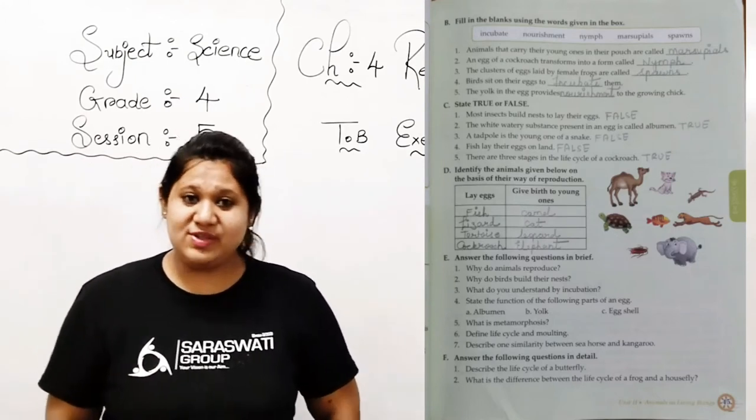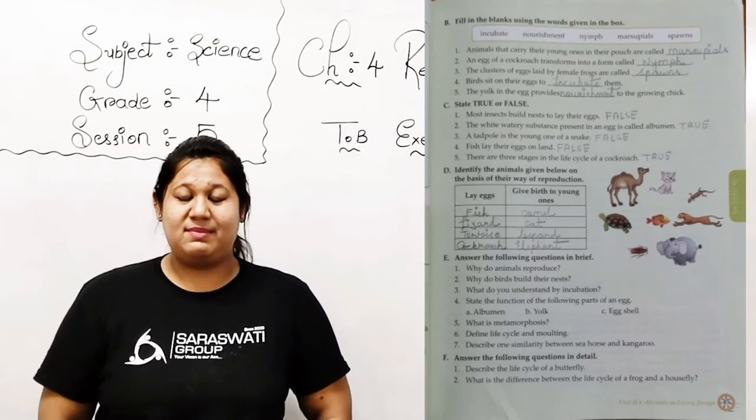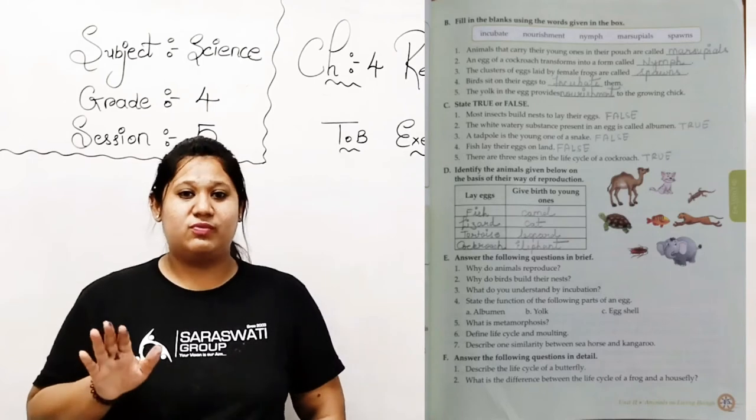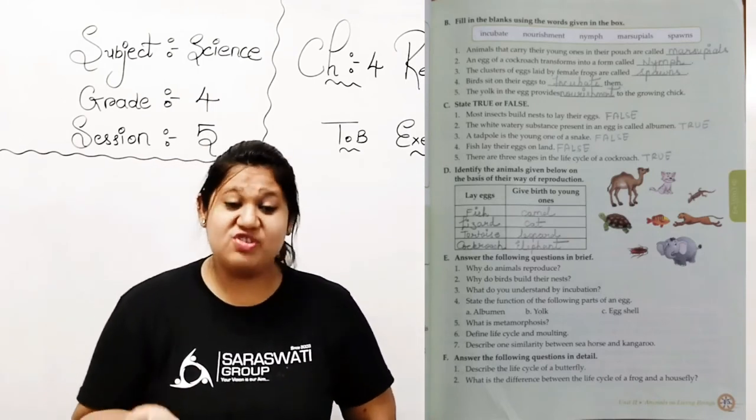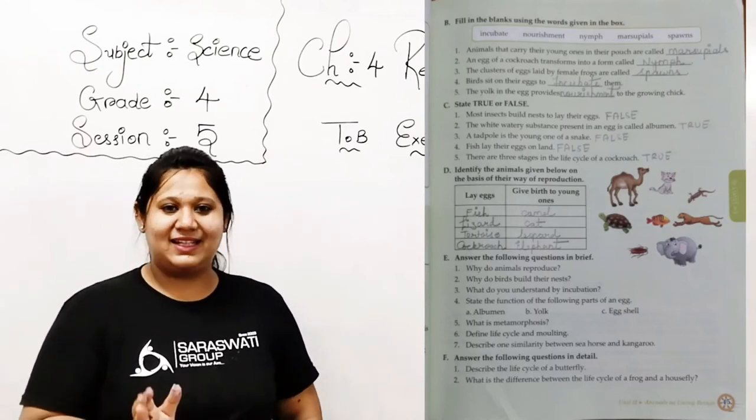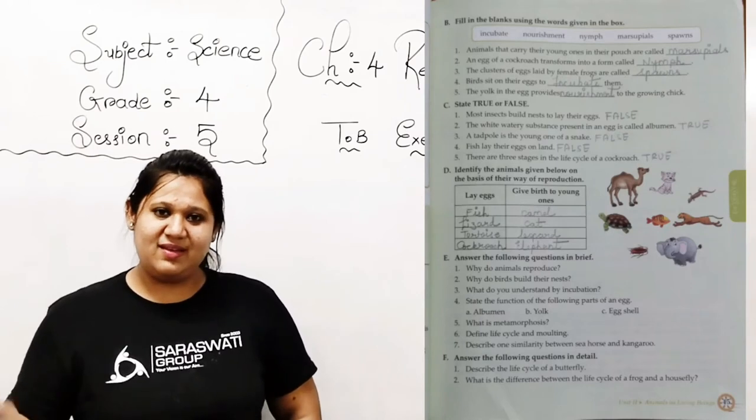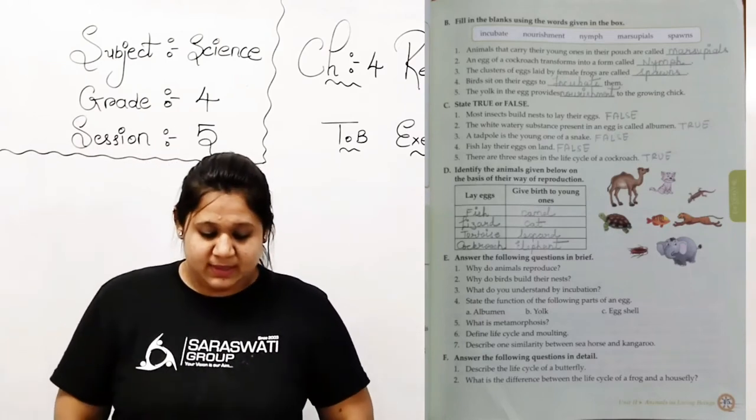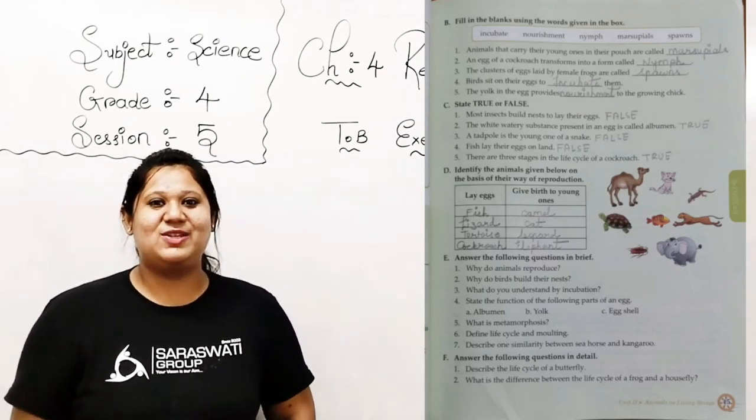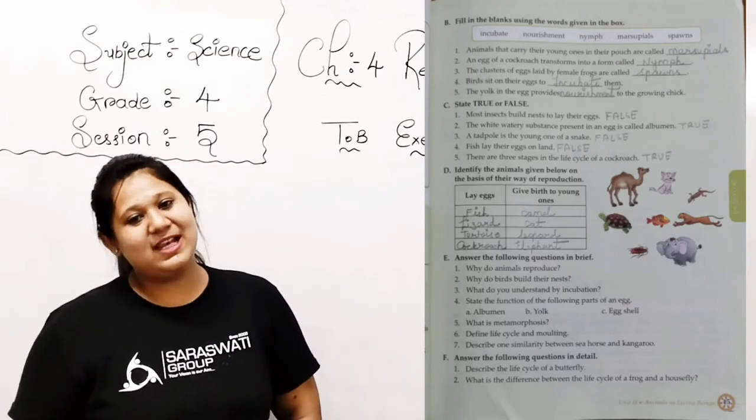Now number 1: most insects build nests to lay their eggs. Most of the insects make nests to lay eggs? No. Mostly few insects are there, few birds are there who make nests. Here it says most insects, right? So this statement is absolutely incorrect because nests are built by birds, not by insects. Clear? So write down false. Kids, the blank is not even there, so you can write it aside, okay?